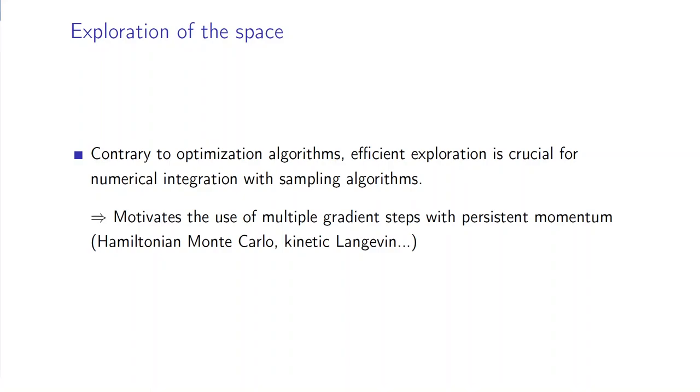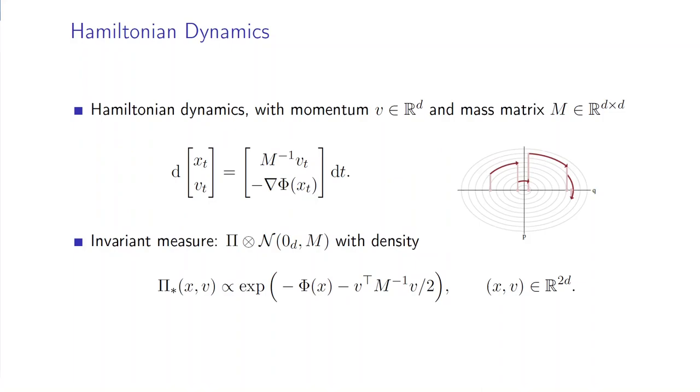Contrary to optimization, where the goal is to converge to the optimizer, here with sampling, efficient exploration is crucial for numerical integration. This motivates the use of multiple gradient steps per proposal with persistent momentum, for instance, with Hamiltonian Monte Carlo and with the so-called kinetic Langevin diffusion.